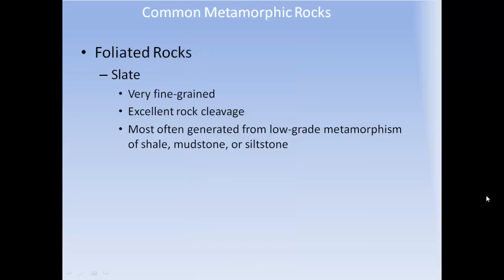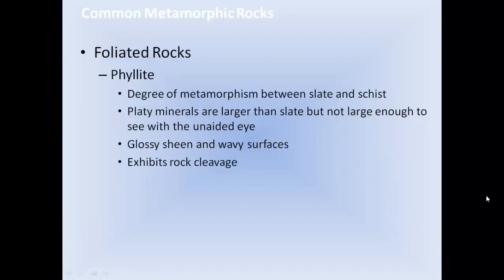Slate is very fine-grained and has excellent rock cleavage. It is most often generated from low-grade metamorphism of shale, mudstone, and siltstone. Phyllite represents a degree of metamorphism between slate and schist. Platy minerals are larger than in slate but not large enough to see with the unaided eye. It has a glossy sheen with wavy surfaces and exhibits rock cleavage.